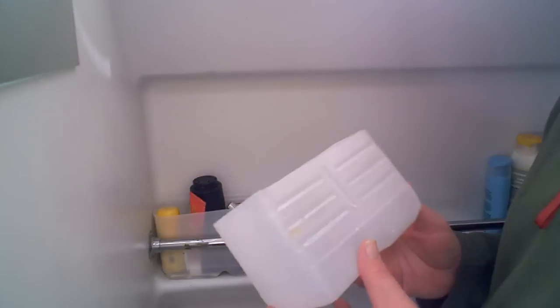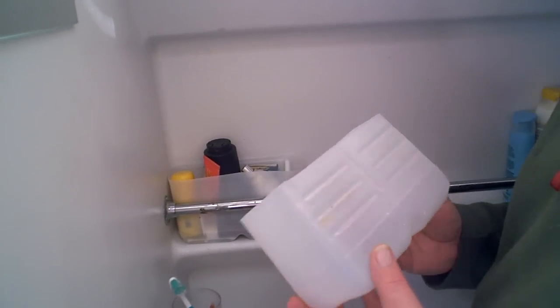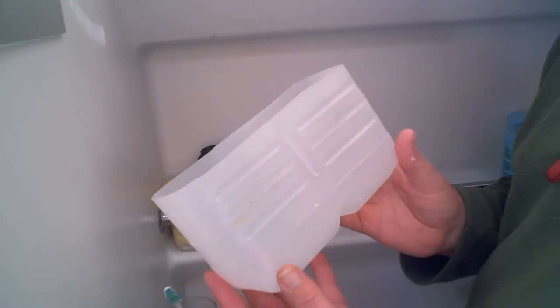Hello again small motorhome owners. This is another great tip for Dimension owners. This is a cut-off four-pint milk bottle.